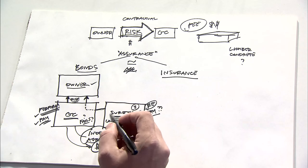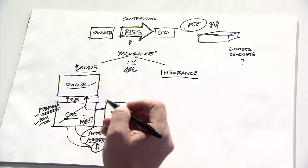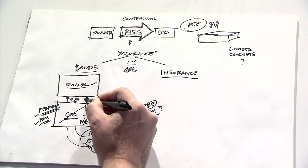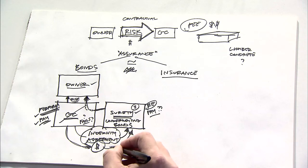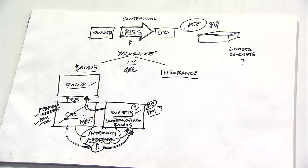And again, through the indemnity agreement, if the contractor did fail and the surety then had to make good on this obligation to perform and pay, then through the indemnity agreement, the contractor would agree to repay the surety.